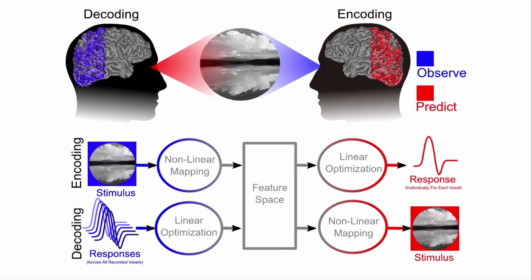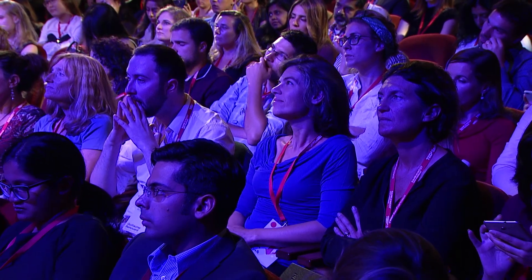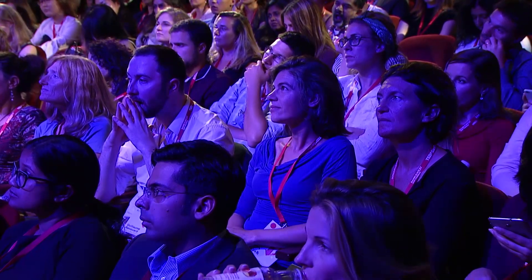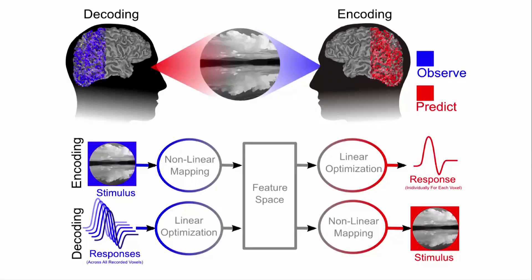One of the interesting things about these encoding models is that once you have a computational model of the brain relating the world to brain activity, you can invert that model and convert your encoding model into a decoding model to decode brain activity. There's an inevitable symmetry between brain encoding and brain decoding such that whenever we can create a better computational model of the brain, we can by definition build a better brain decoder. It's often easier to understand what information we can recover by looking at these decoders.